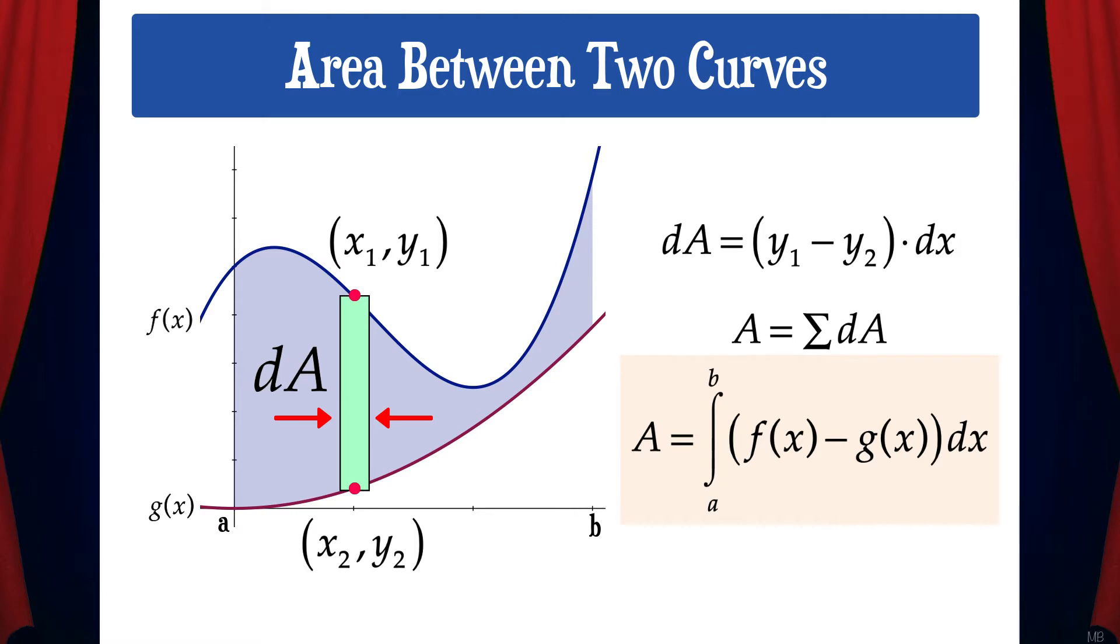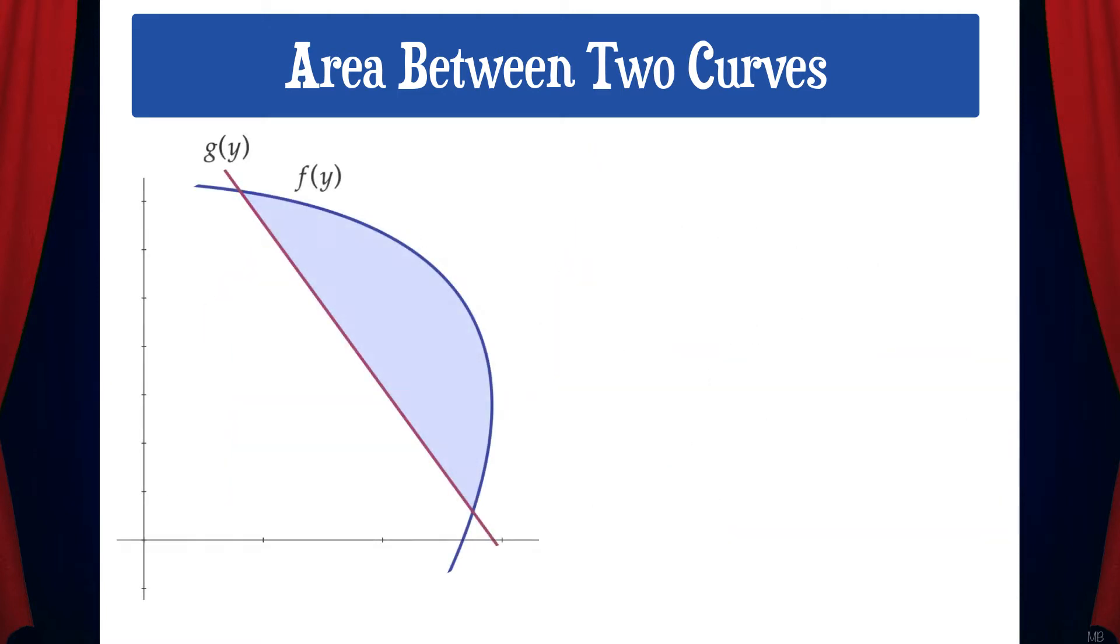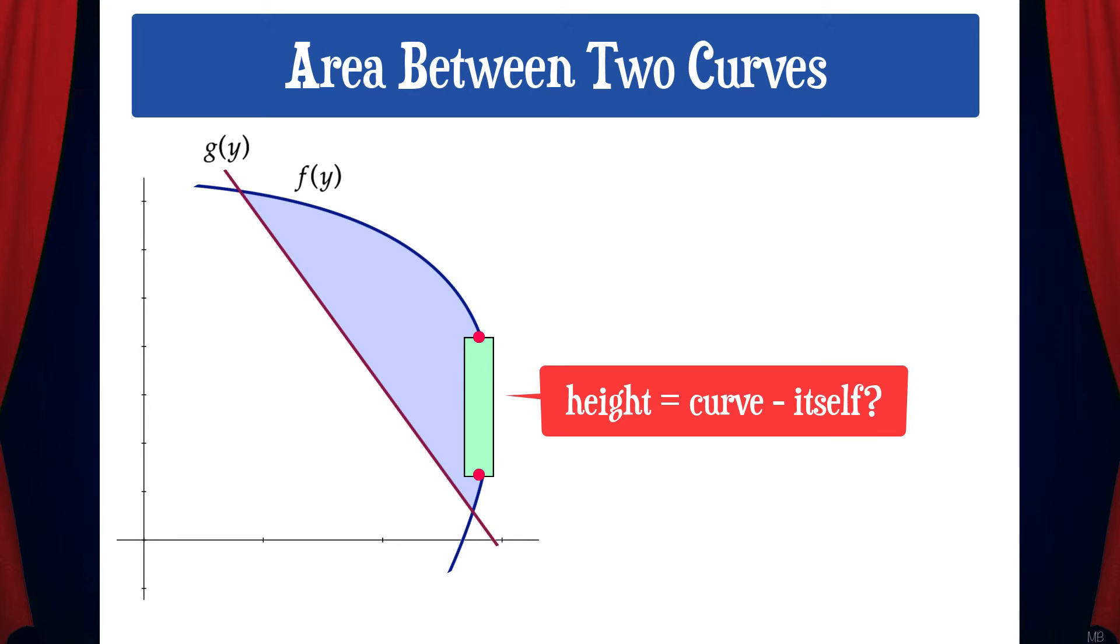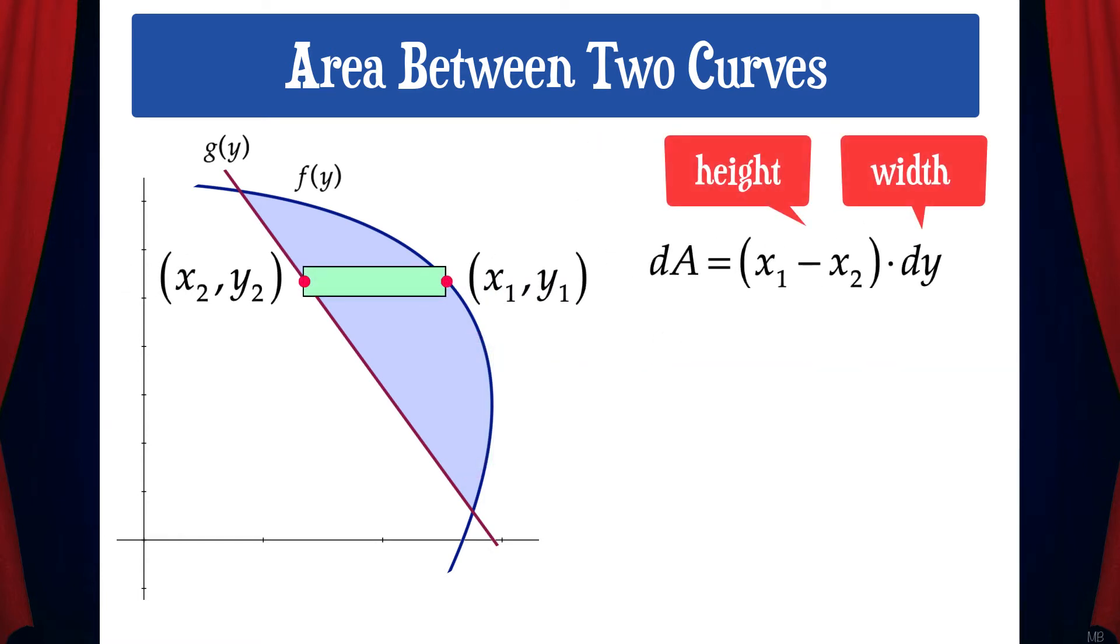And sometimes, depending on the curves, it makes sense to have the sample strip horizontal. In this case, for example, if we use vertical sample strips, there are parts where we would have to have the curve minus itself. We wouldn't get y1 minus y2. Instead, we'll use horizontal sample strips.